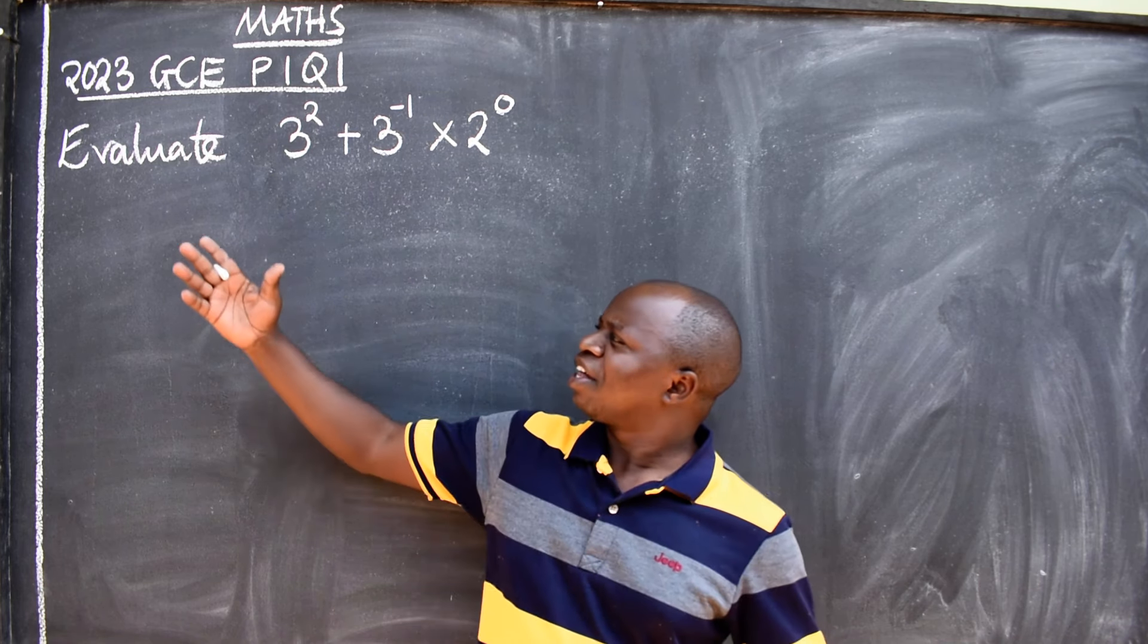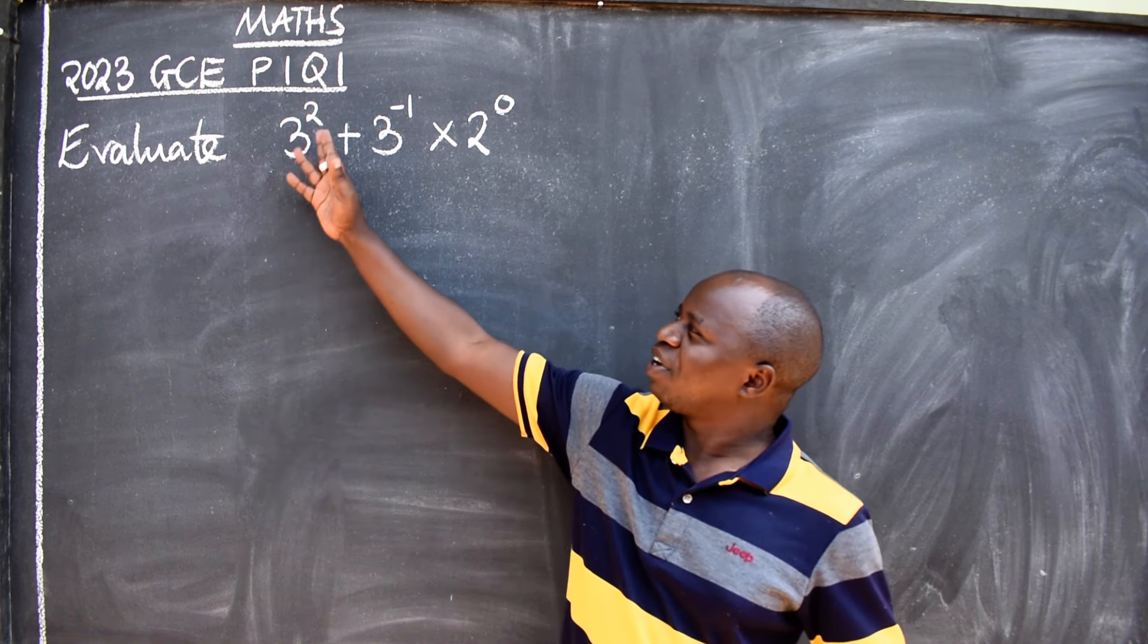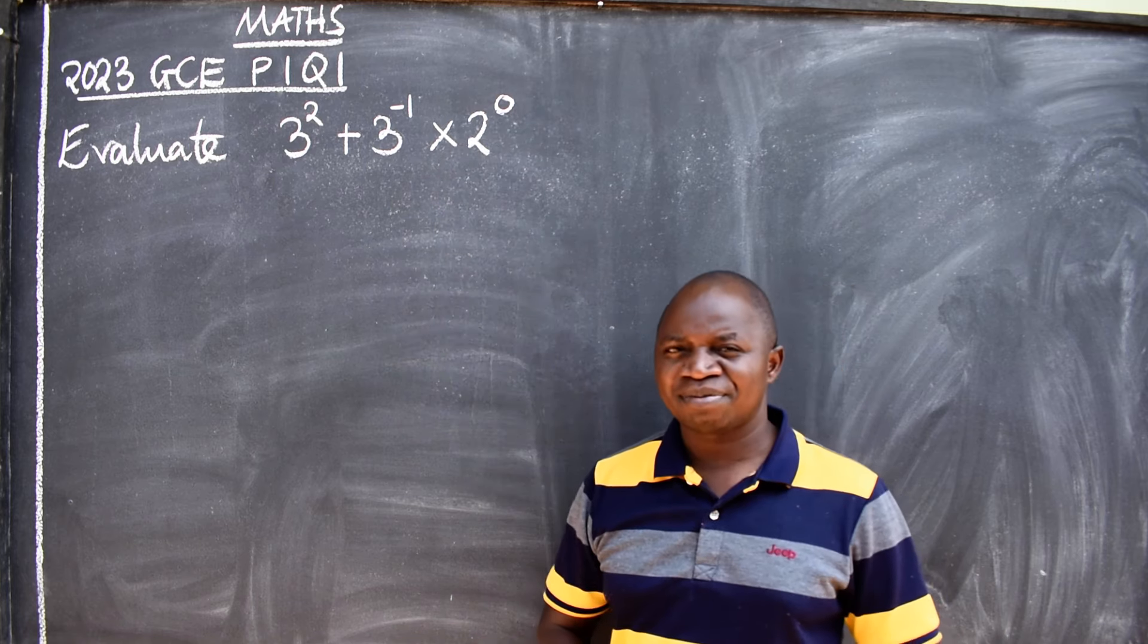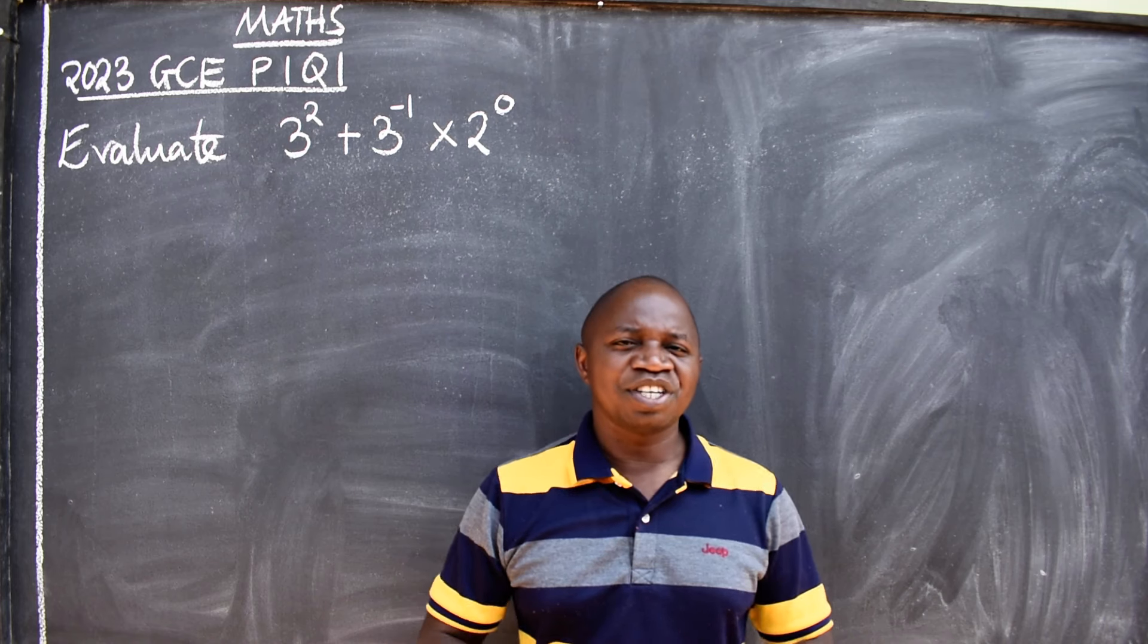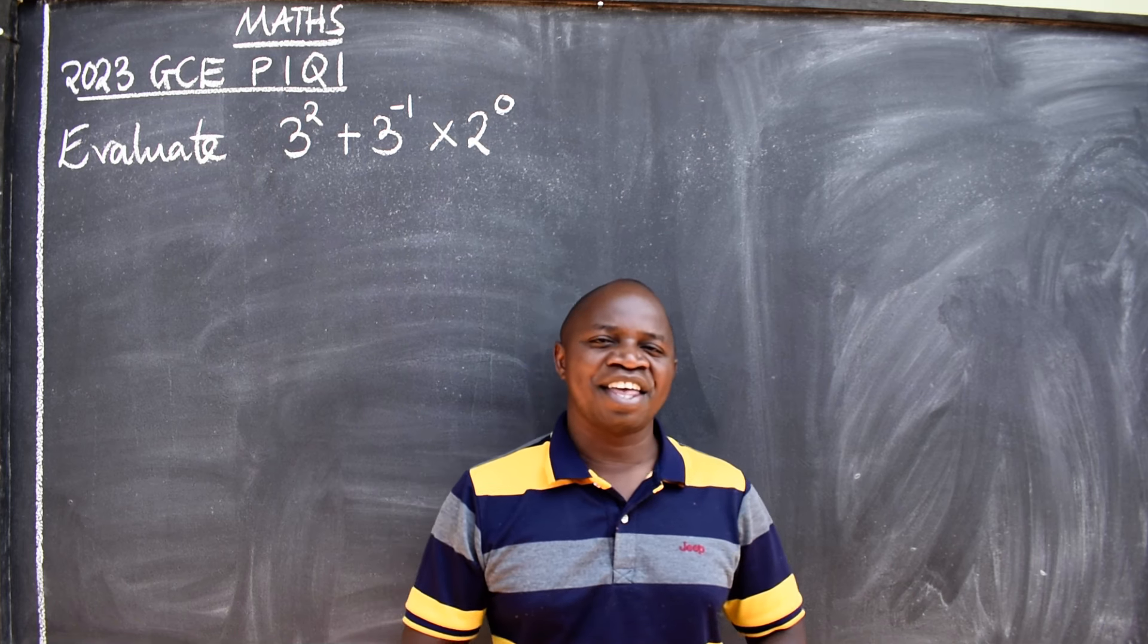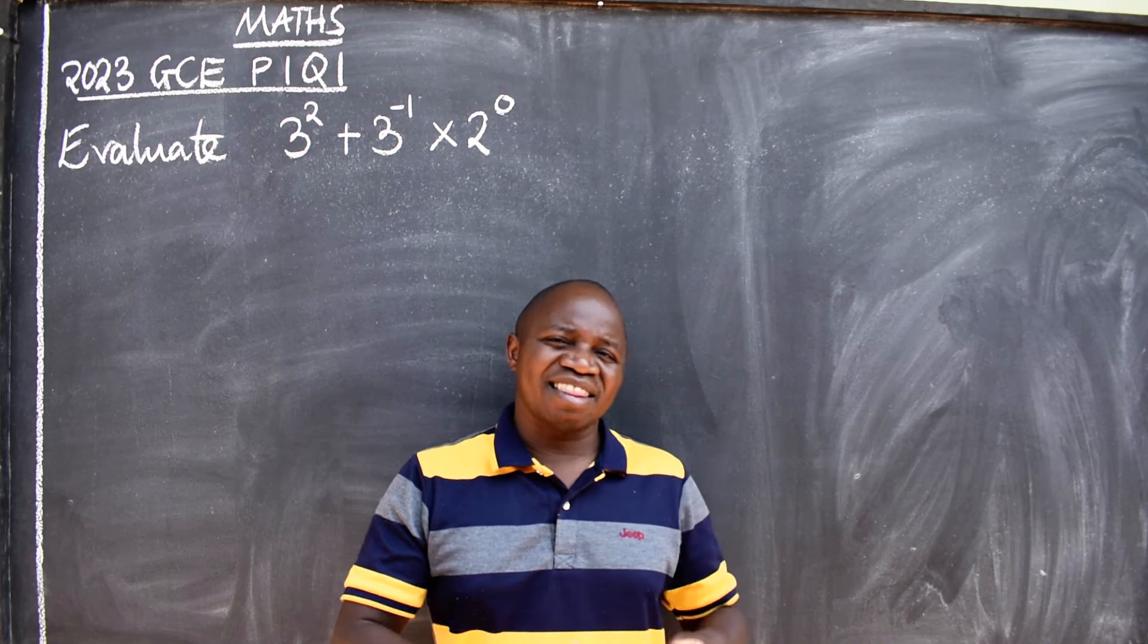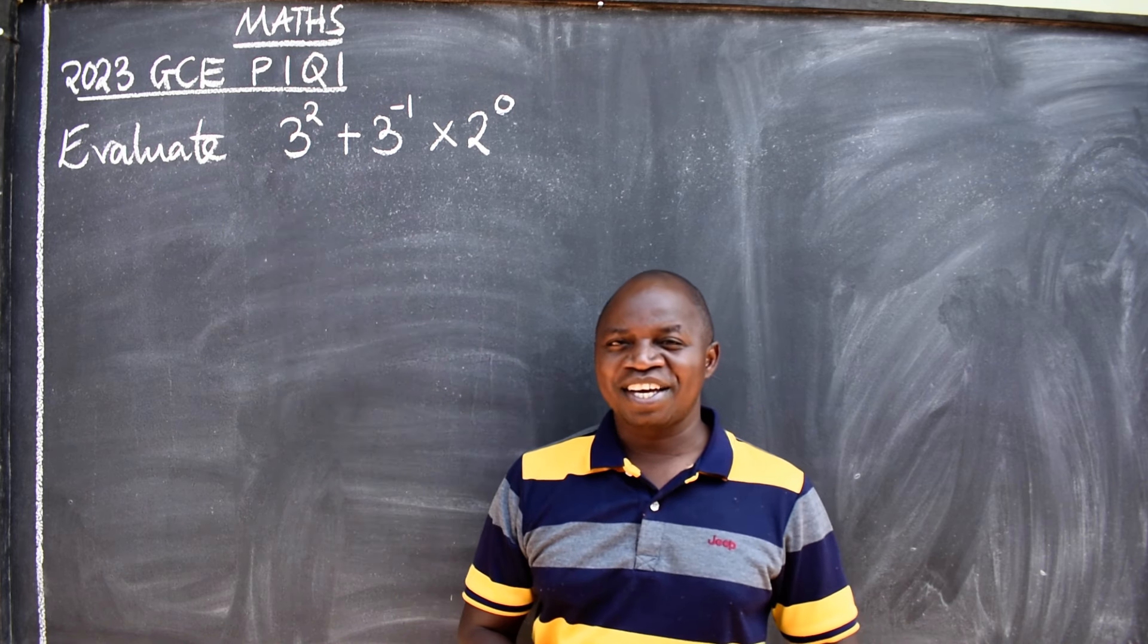The question reads: Evaluate 3 raised to the power 2 plus 3 raised to the power negative 1 times 2 to the power 0. Like I always say, the first thing that you need to do whenever you are given a question is to identify the topic from which the question is coming from. That will help you remember some concepts under that topic.